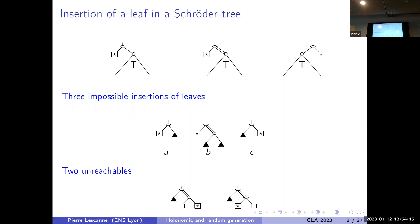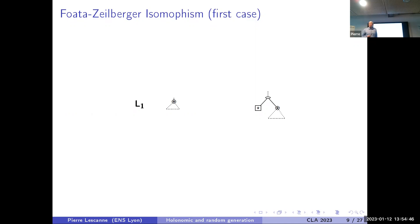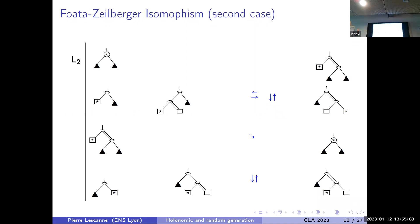Fusy and Zeilberger were able to describe a construction. The idea is to look at where you insert the leaf. There are three cases. You insert the leaf on the left and the new link you create for the rest of the tree is black — Fusy and Zeilberger call that L1. Then there is case L2: you insert the leaf on the left and insert the rest of the tree by a white right link.